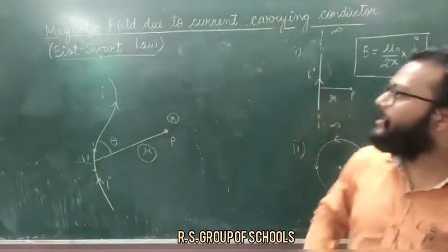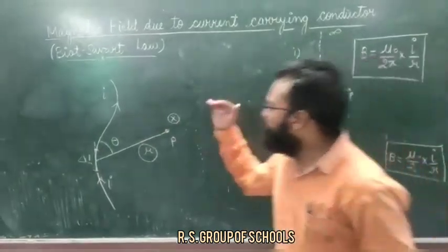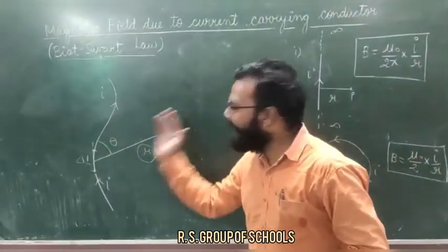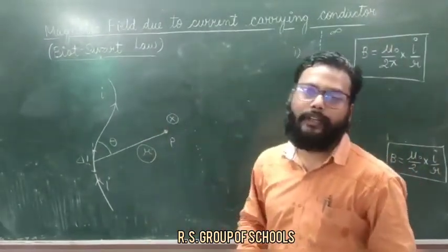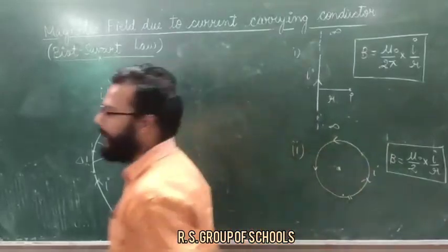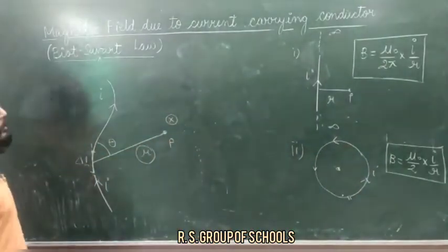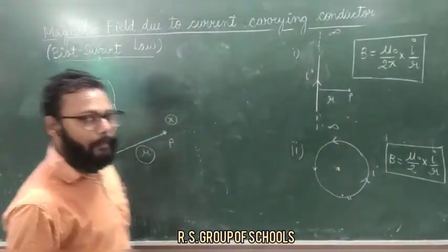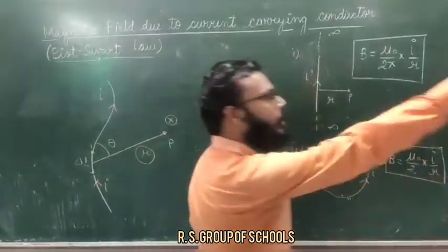Now we are going to discuss how we are able to find out the direction of the magnetic field at a particular point. Here we have to learn the right-hand rule to find out the direction of the magnetic field.